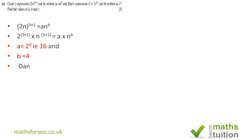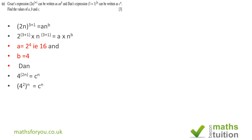For Dan: 3+1=4, so we can say 4 to the power 2n is the same as (4²) to the power n. So in this case C=4²=16.